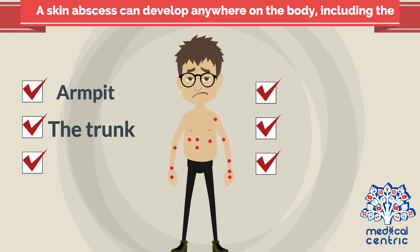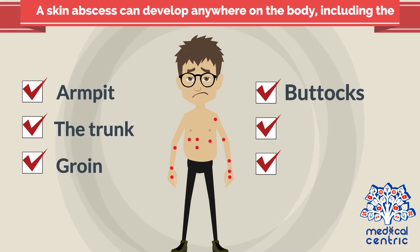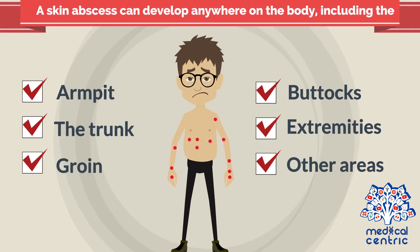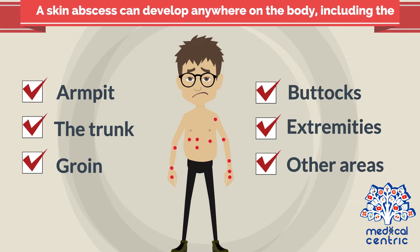A skin abscess can develop anywhere on the body, including the armpit, the trunk, groin, buttocks, extremities, or other areas.